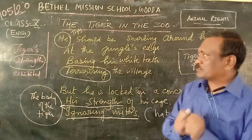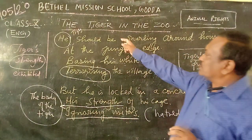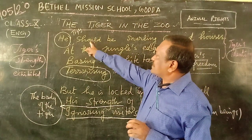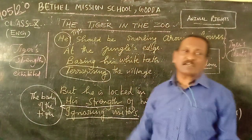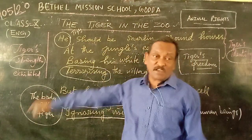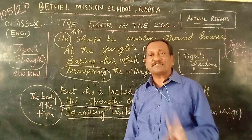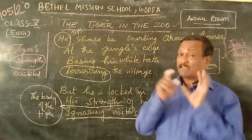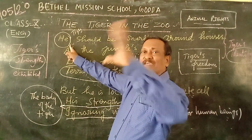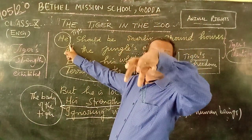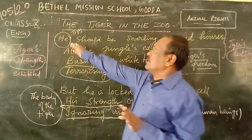Today we will discuss the last three stanzas of the poem. The third stanza finished as such: 'He should be snarling around houses at the jungle's edge.' Who does the word 'he' refer to? Obviously, the tiger. In the last class, I discussed the literary device involved in this poem — the poet addresses the tiger as 'he,' considering the tiger as a human being who has life. Therefore, the literary device applied here is personification.